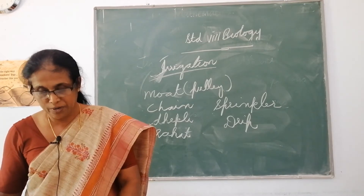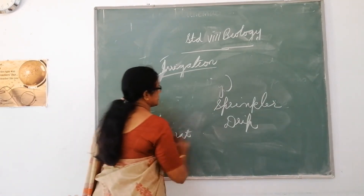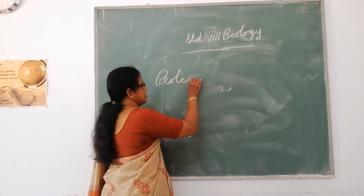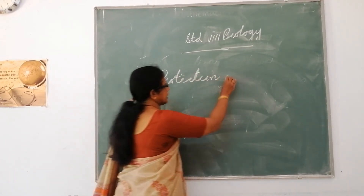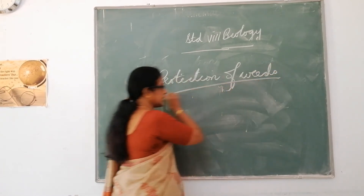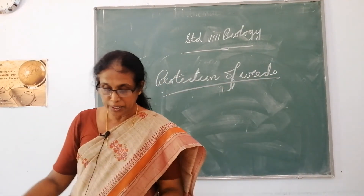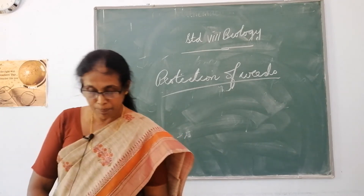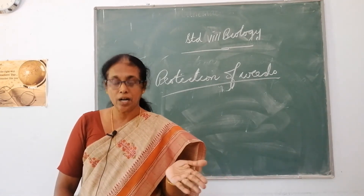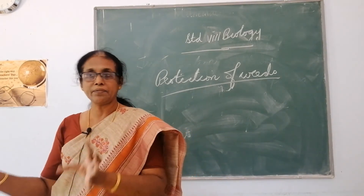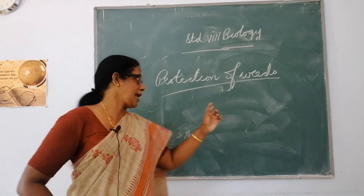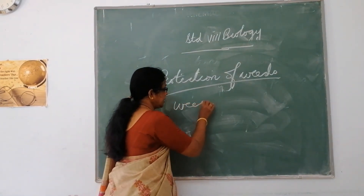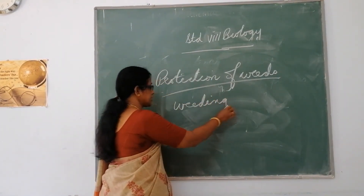Moving to the next agricultural practice: protection from weeds. What is a weed? The unwanted plants that are growing around the crops are known as weeds. In fields, many undesirable plants may grow naturally along with the crops. These undesirable plants are known as weeds, and the removal of weeds is known as weeding.